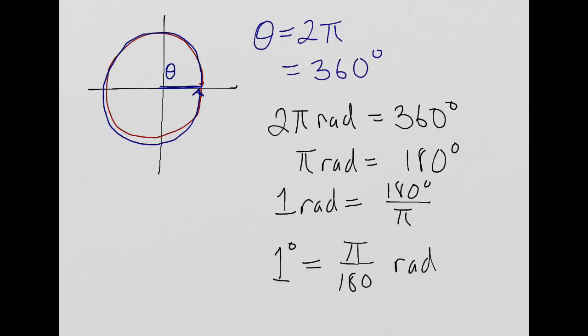So, if we want to convert degrees into radians, start with something in degrees, multiply by pi over 180, you'll get the value in radians. If you want to convert from radians to degrees, start with something in radians, multiply by 180 over pi, that'll convert it to degrees.